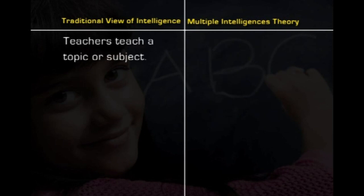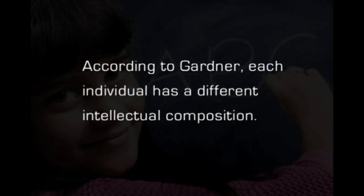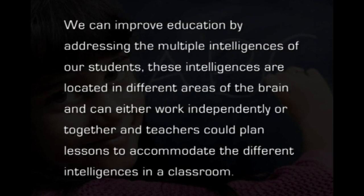Teachers structure learning activities around an issue or question that connects subjects, and develop strategies that allow students to demonstrate multiple ways of understanding and value their uniqueness. In short, according to Gardner, each individual has a different intellectual composition. We can improve education by addressing the multiple intelligences of our students. These intelligences are located in different areas of the brain and can either work independently or together, and teachers could plan their lessons to accommodate different intelligences in their classroom.